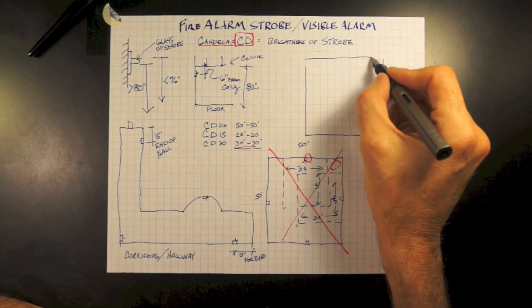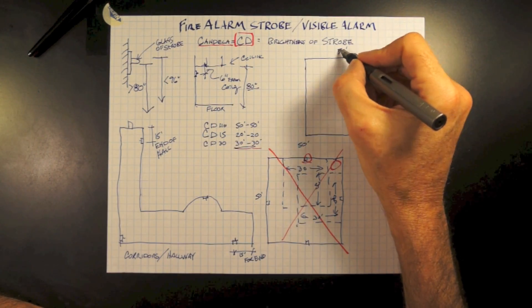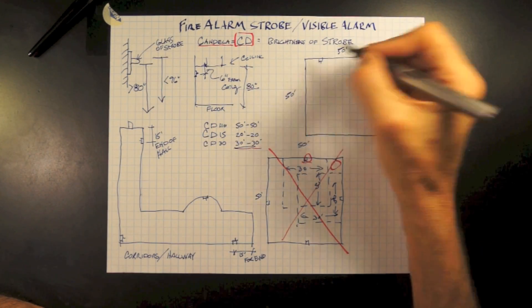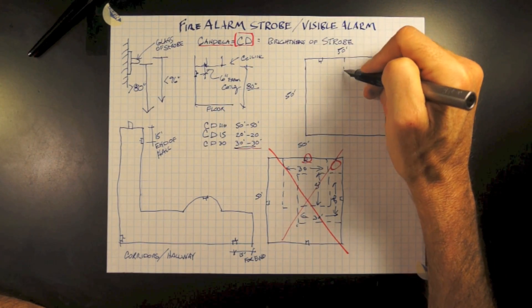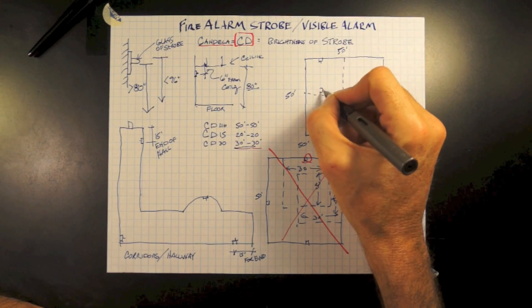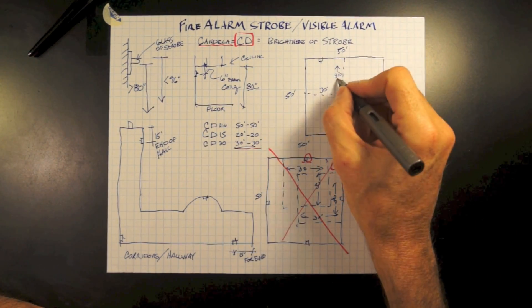So with a candela of 30 feet, basically 15 feet from either side, we place the strobe 15 feet from the wall and we have our coverage out.